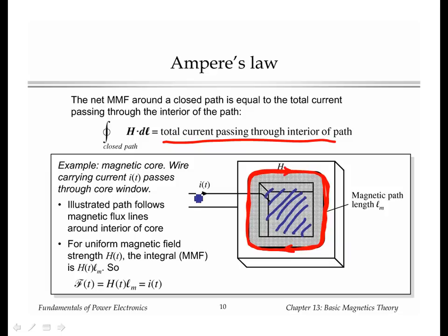If you have one turn of wire carrying a current I, you'll have that current I passing through the hole in the middle of the core, and the right hand side is I. If you put in turns, each turn will go through the interior of the core, and we'll have a total net current of N times I passing through the interior, and Ampere's law will give us NI.